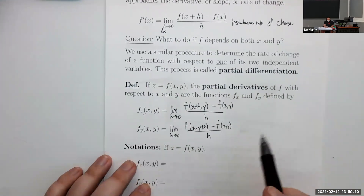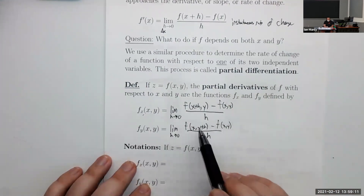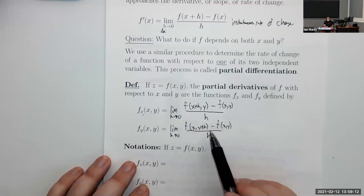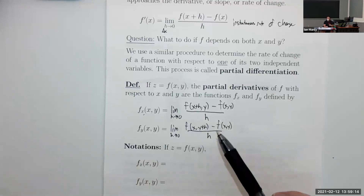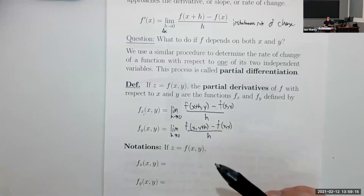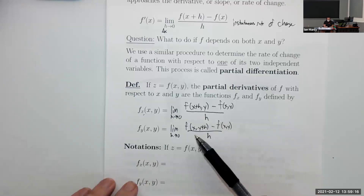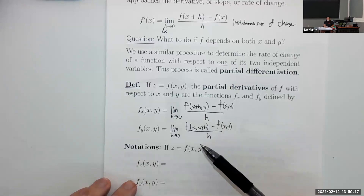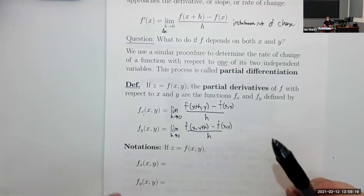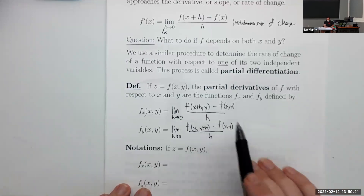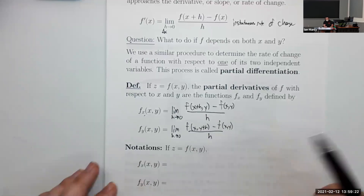You might be wondering what happens if you change both variables at once. We'll eventually get to that in a later lesson where we can change both variables at the same time and see what kind of derivative that produces. But for now, we're just going to change these separately.